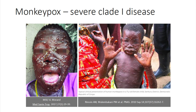Often the images people have seen prior to 2022 are like these — this is very much at the severe end of the spectrum, severe clade one disease. This isn't typical of all monkeypox. Most people with monkeypox will have much milder disease, but it's a reminder that this can be a really horrible, devastating illness that can result in fatality and in long-term scarring and stigmatization.